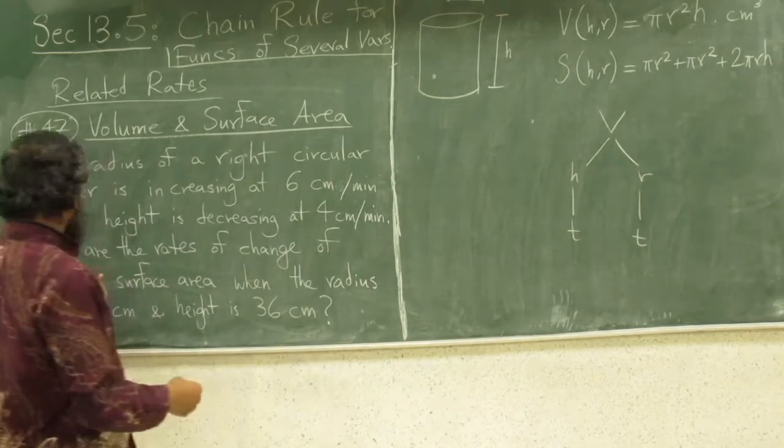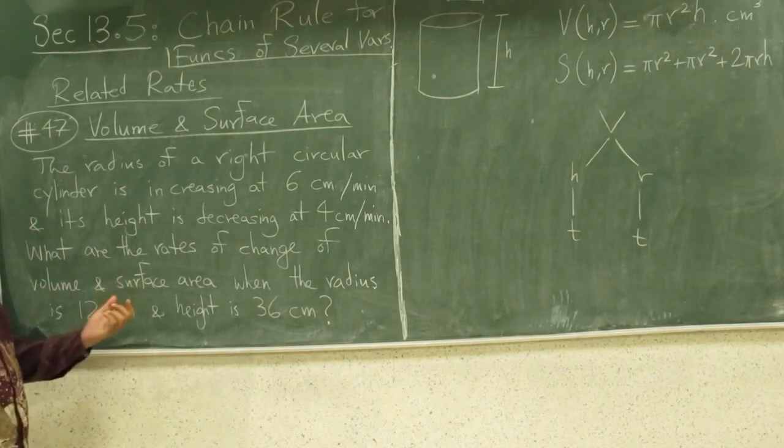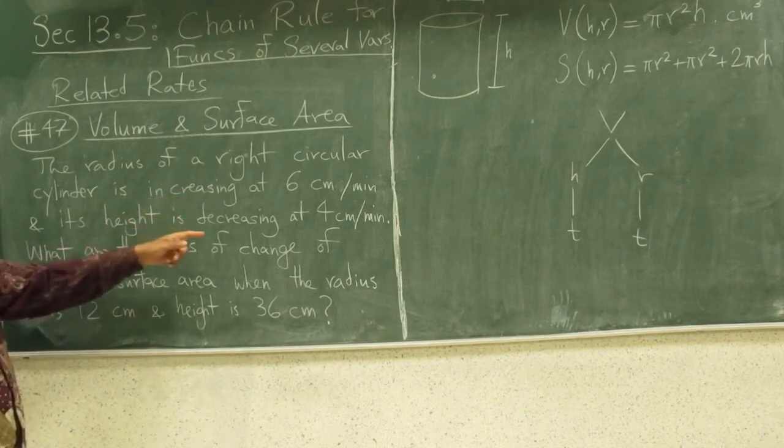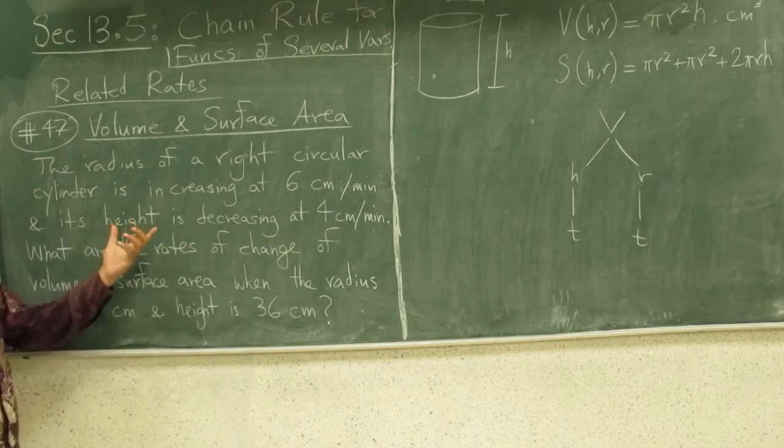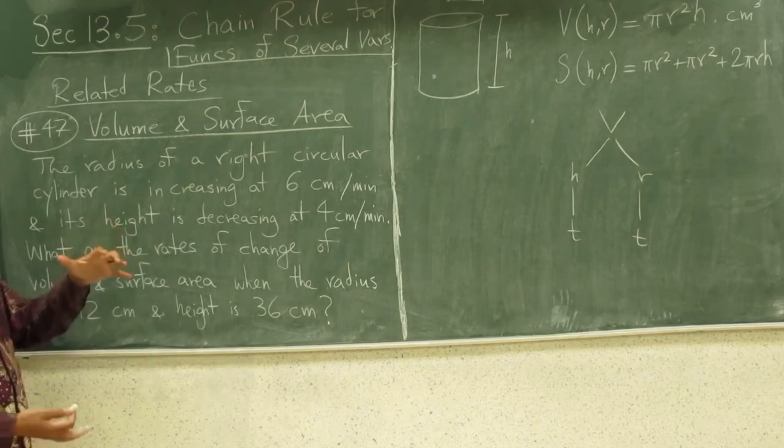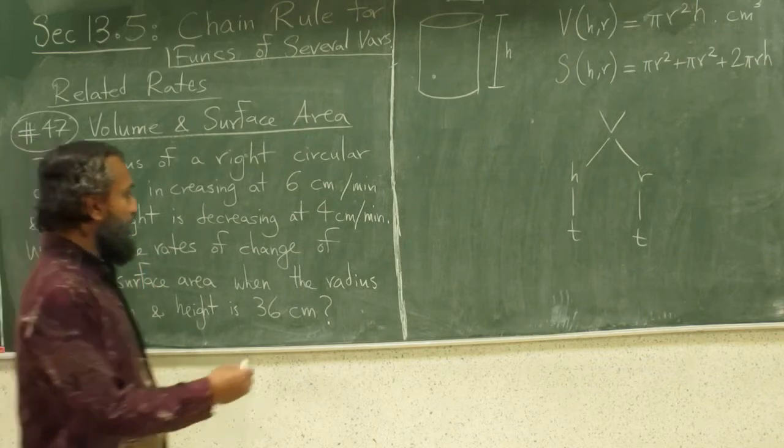We are asked what is the rate of change of the volume. The radius is increasing at 6 centimeters per minute and the height is decreasing at 4. It is not even obvious to me right now if the overall volume of the cylinder is increasing or decreasing. No worries, we will find out.